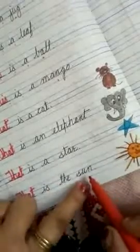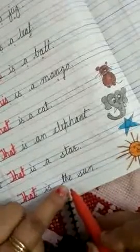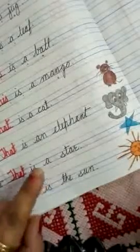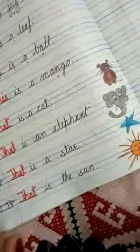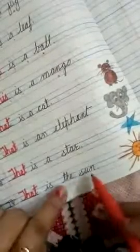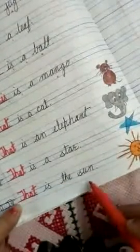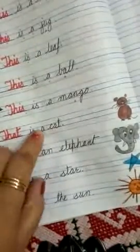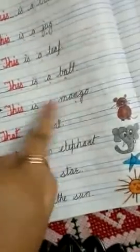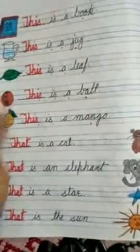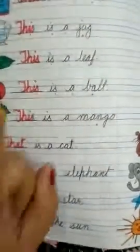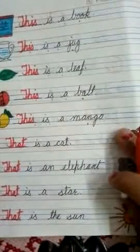Students, I have used 'the sun' with 'the' because the sun is a universal thing — it is a special, unique thing. There is only one sun in the universe, so we use 'the sun.' Also note that 'this' and 'that' are used for singular things — meaning only one thing.